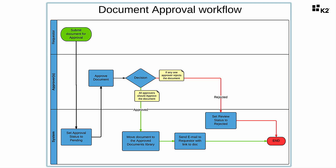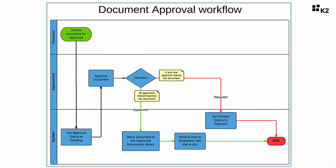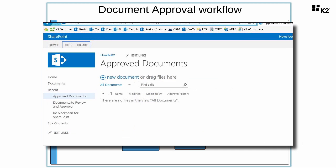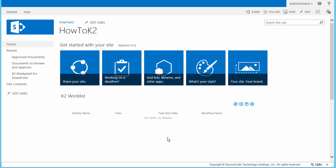For our data source, we will be using two separate document libraries. One called Documents to Review and Approve will act as the working area for documents as they are updated and follow the review and approval workflows. The second library called Approved Documents will be the landing site for documents once they are approved for release at the end of the approval workflow. Because any document review and approval system needs documents in order to work, let's start this demonstration by first uploading two documents, and then we'll start the review document workflow for both of them.